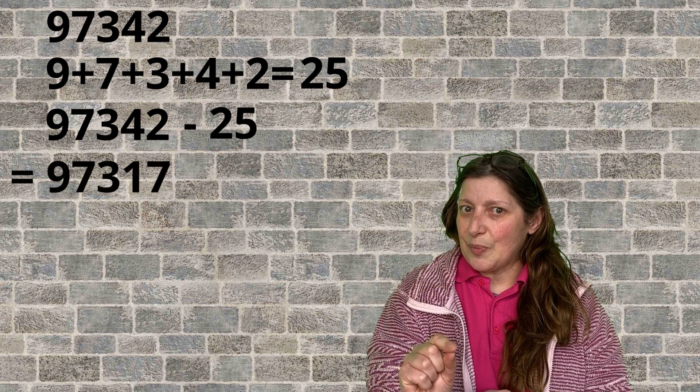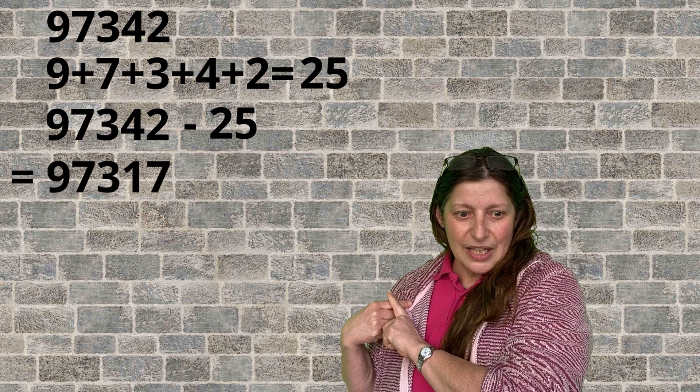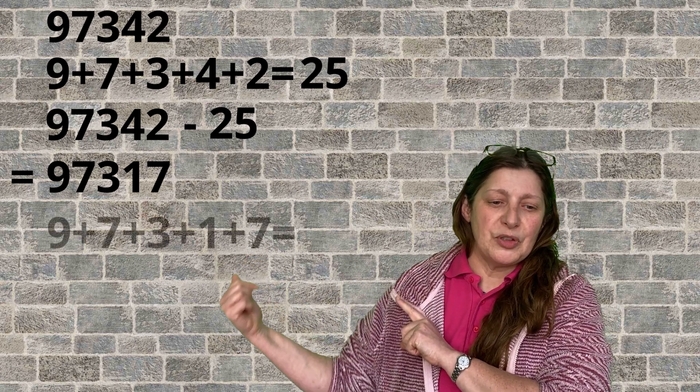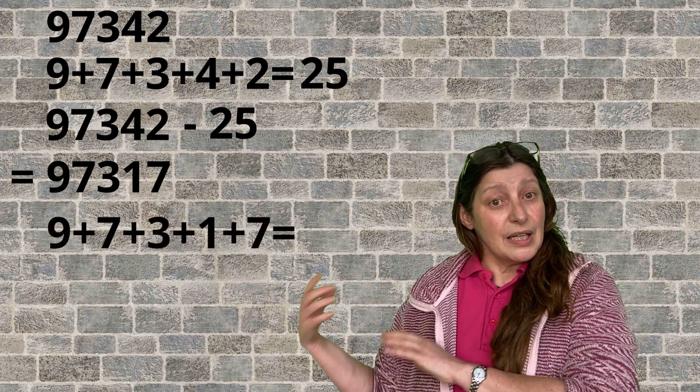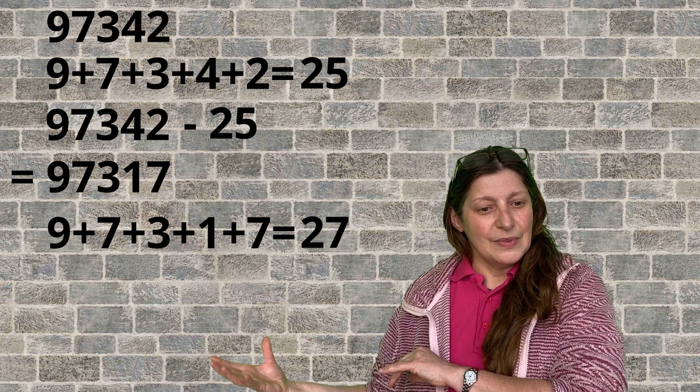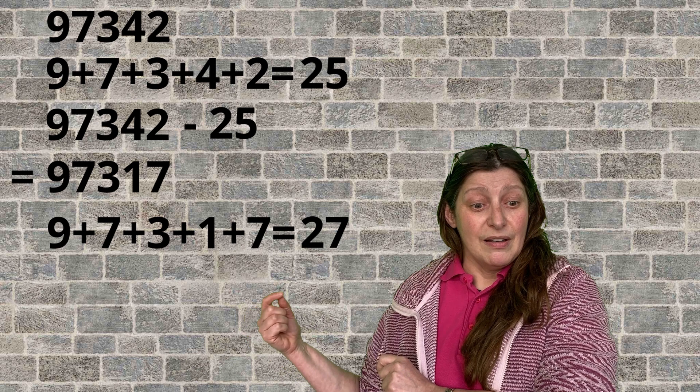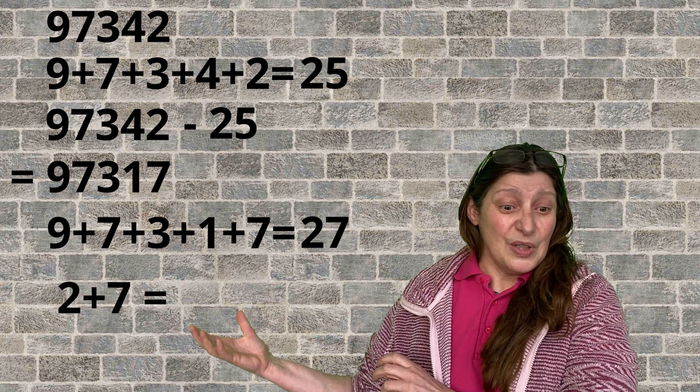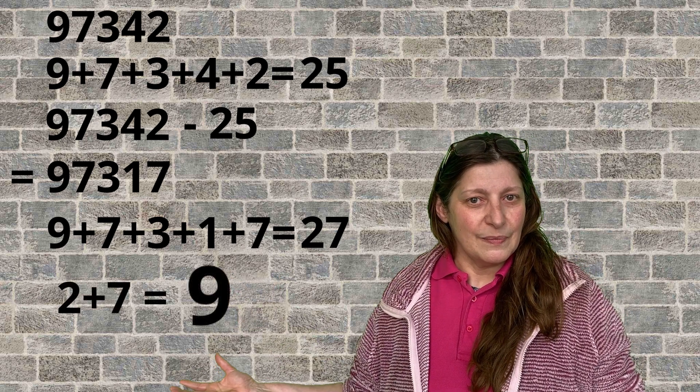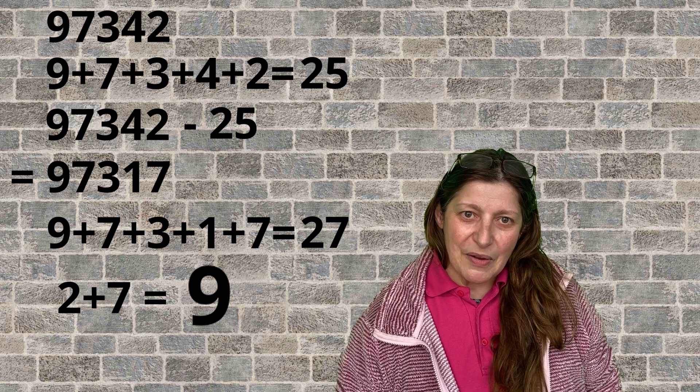Next step, add all those digits together. So, 9 plus 7 plus 3 plus 1 plus 7. That makes 27. And final step, add those two digits together. 7 and 2 is 9. You know the surprising thing about it?